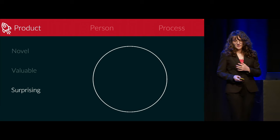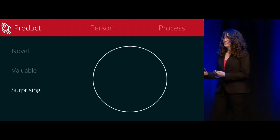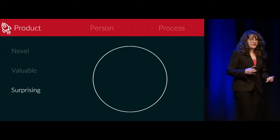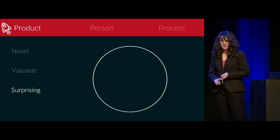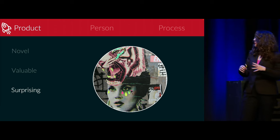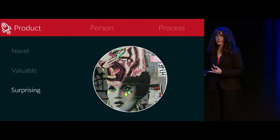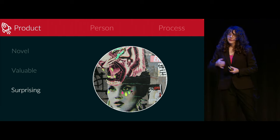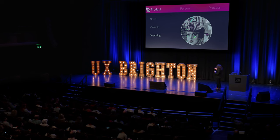For Boden, surprise is a third condition for creativity, and she breaks it down further into three kinds corresponding to three different types of creativity: combinational creativity, exploratory creativity, and transformational creativity. The first, combinational creativity, is about combining different ideas together to make something new — familiar ideas or familiar things recombined to produce something new and valuable. Boden offers examples such as analogies, imagery in poems, and collage — bringing together different images to make a new one.